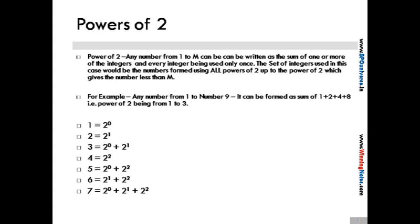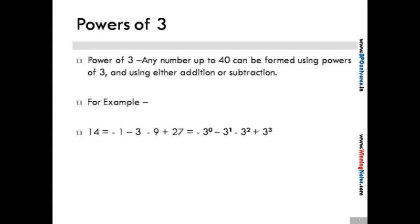The next thing that we are going to cover is powers of 3. Now any number up to 40 can be written using powers of 3 and doing a subtraction or addition to that number. 14 can be written as -3^0 - 3^1 - 3^2 + 3^3. Hence this number is being represented by only the number 3 using the signs plus and minus and using various integers as the power of 3.